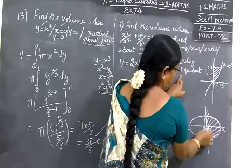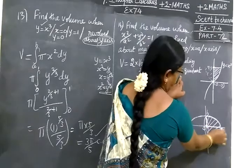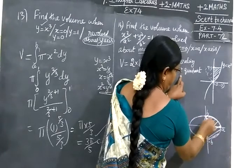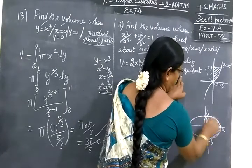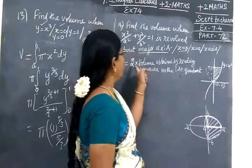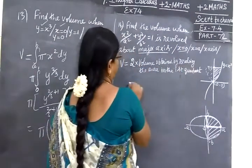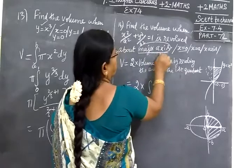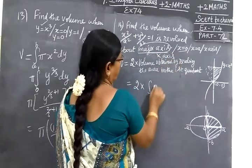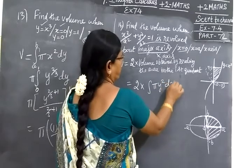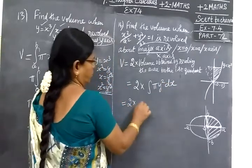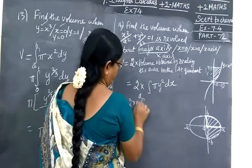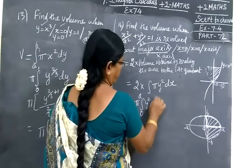That is x = 0, x = A, the x-axis, and the ellipse. In the fourth quadrant, when we revolve it, this also revolves. So 2 times. Now the limit is about the major axis, which is the x-axis. So for the x-axis, the formula is π y² dx. So 2 × π ∫ y² dx from 0 to A. Take π outside.